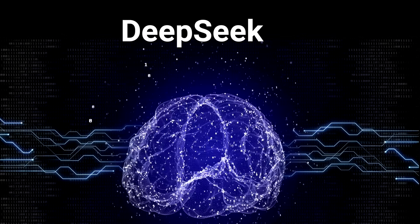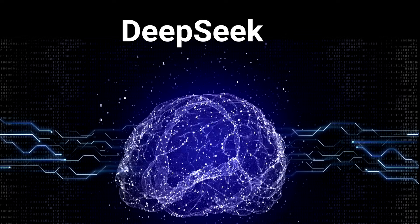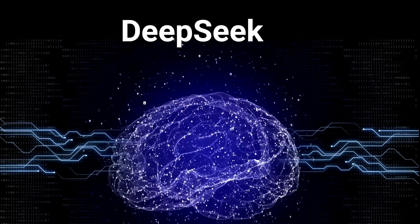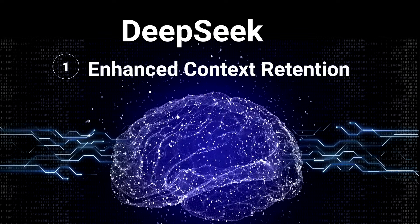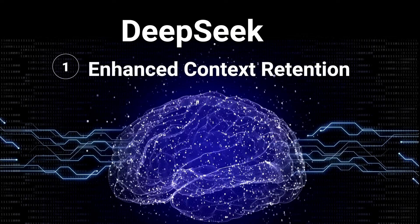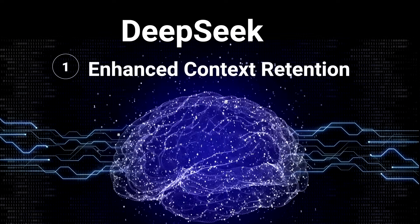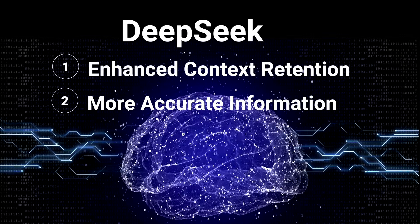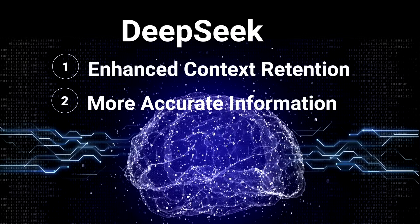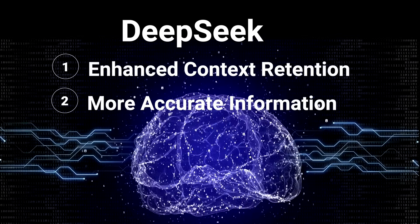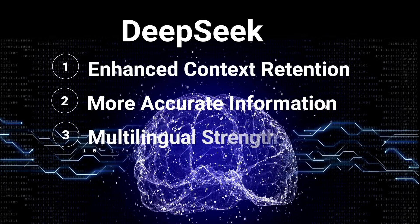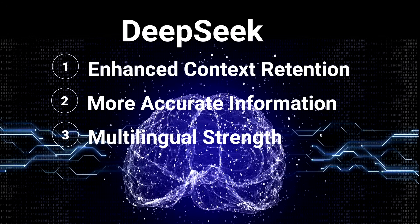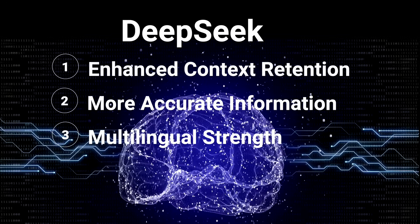DeepSeek AI is built on an advanced transformer architecture similar to GPT-4 and Google's Gemini models, but it differentiates itself with enhanced context retention, so DeepSeek aims to remember longer conversations and maintain consistency. It focuses on reducing AI hallucinations by improving its knowledge base and response verification. Unlike some AI models that struggle with non-English languages, DeepSeek AI is designed to perform equally well across multiple languages.